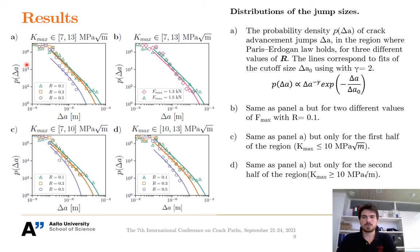One can then fit this type of distributions to the data using this equation, with gamma equal to 2 and delta A0 as the free parameter. For the case of different values of R, the probability density distributions with the fitted lines can be seen here on this image. An increase in R clearly corresponds to a decrease in the cutoff size. Similarly, one can see that effect of the different values of F_max as increases F_max corresponds to an increase in the cutoff size.